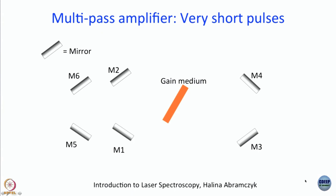We have drawn a gain medium and a lot of mirrors: M1, M2, M3, M4, M5, M6. There is no guarantee that there will be exactly 6 mirrors — there can be more or less, and the geometry can be such that M2 is used as both M2 and M4. It all depends on how efficiently one can design it.